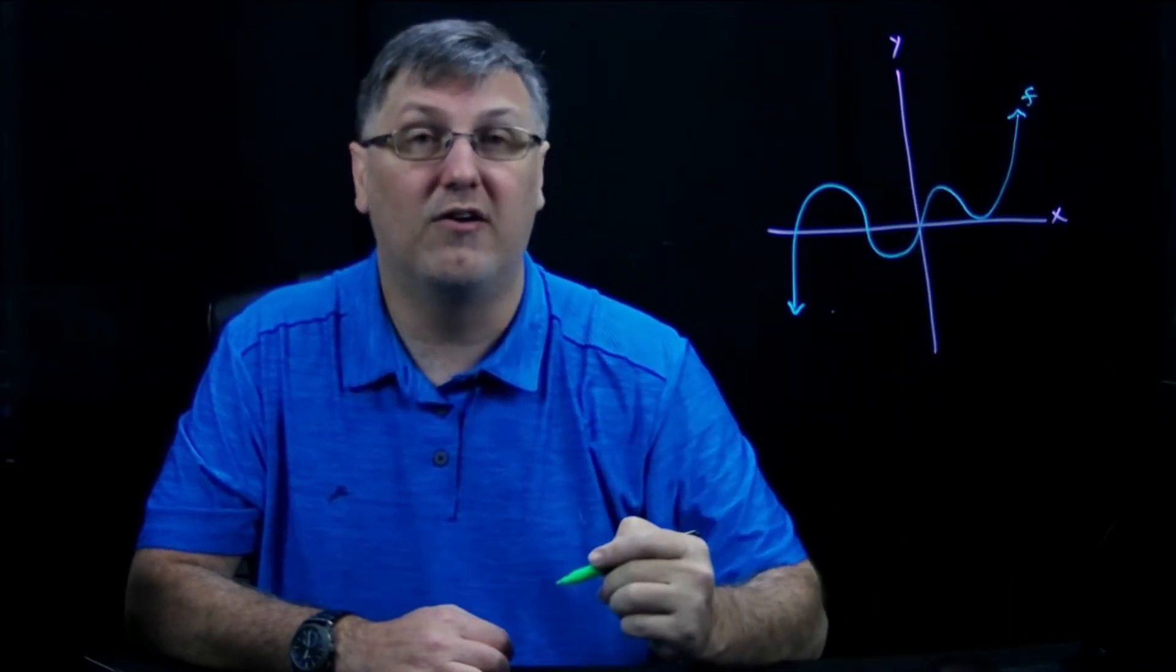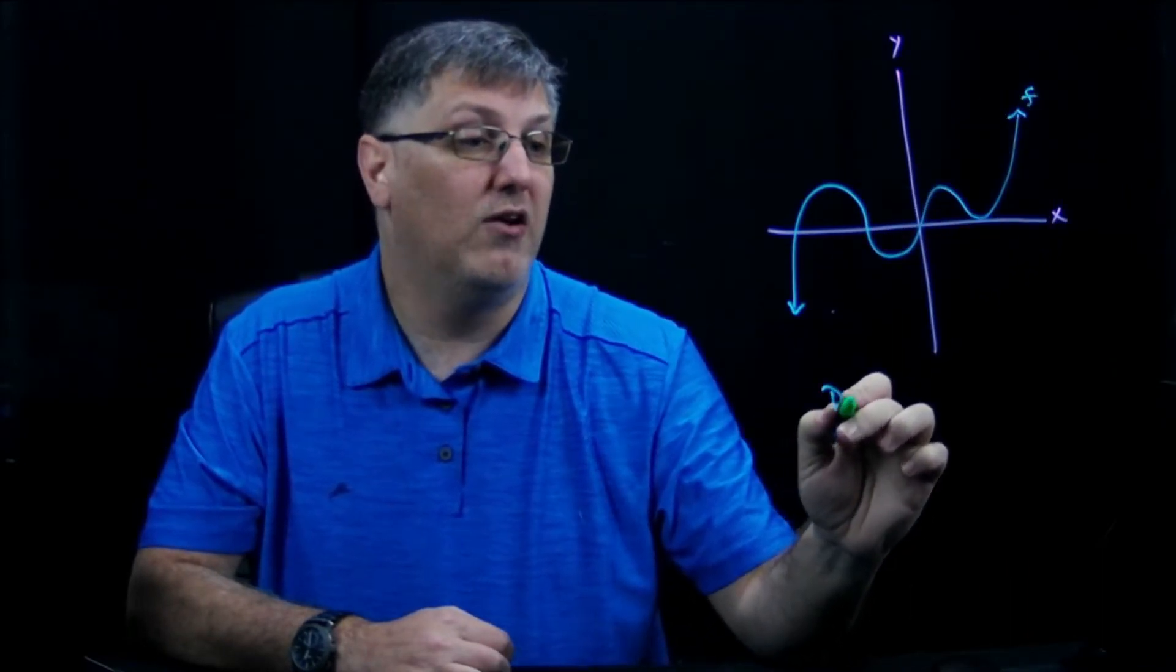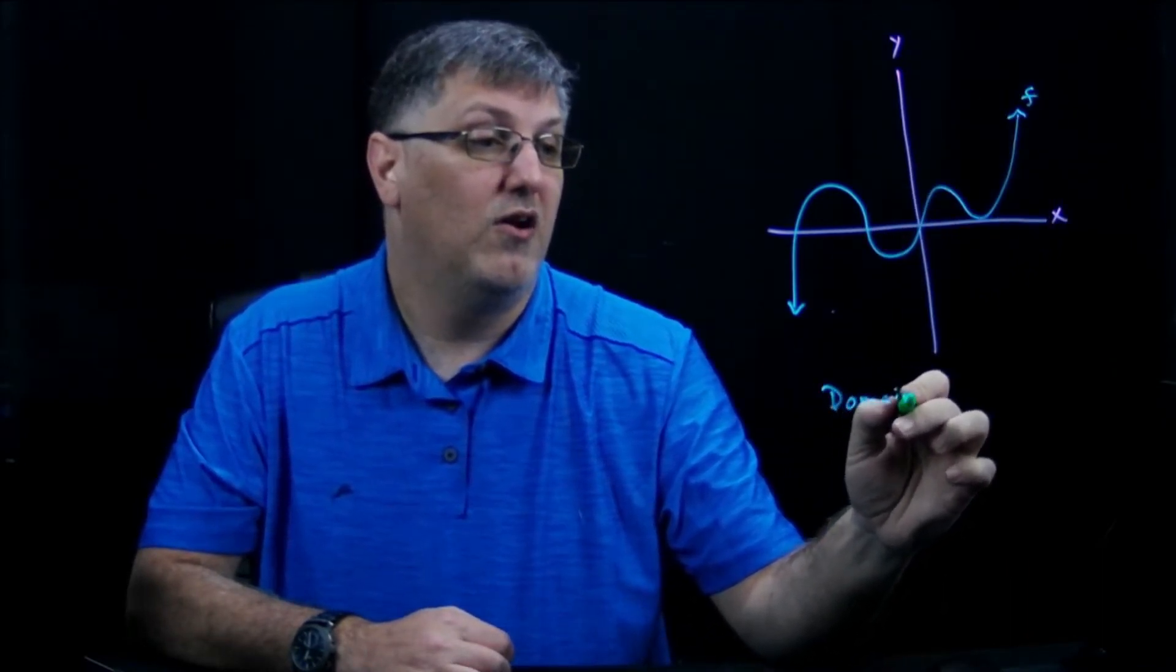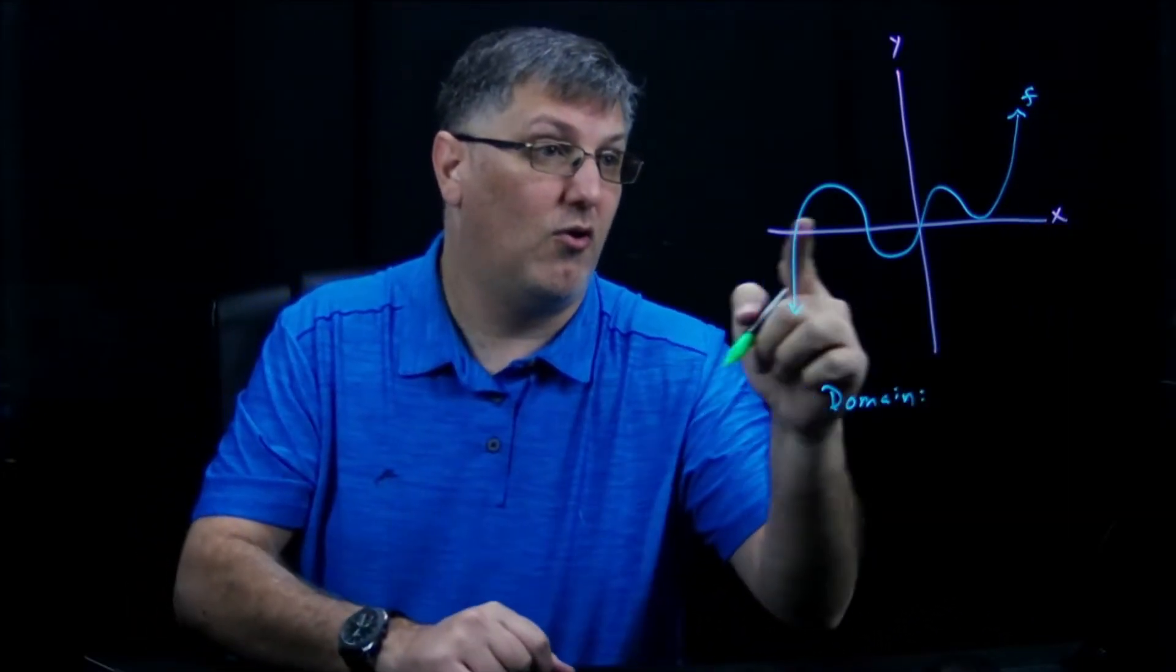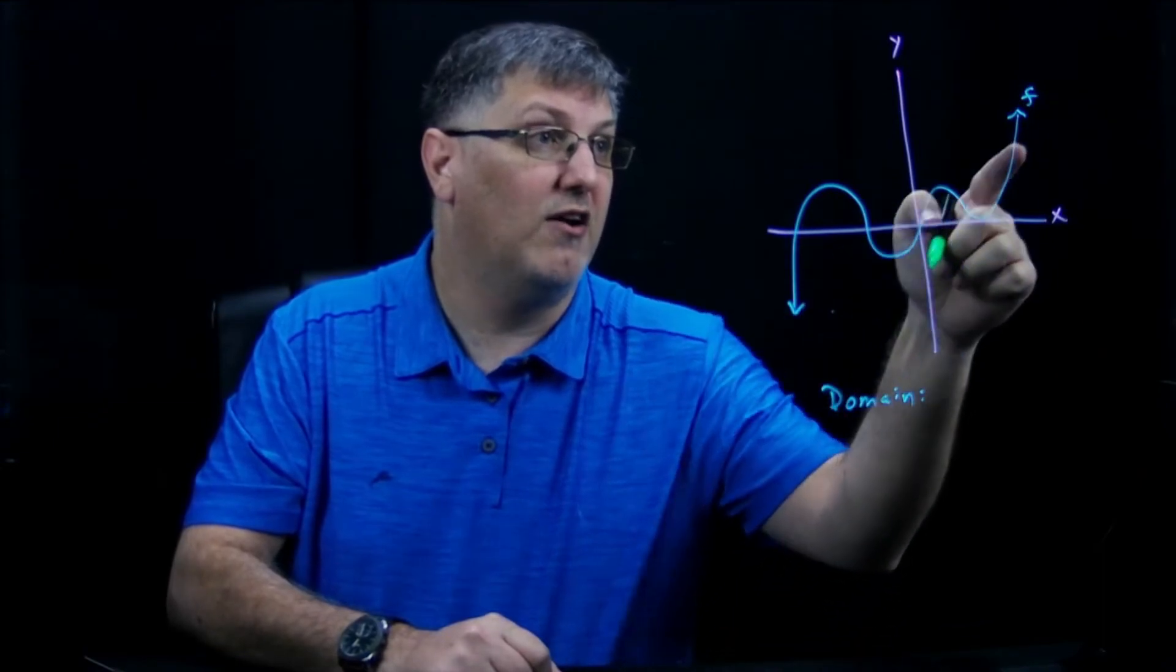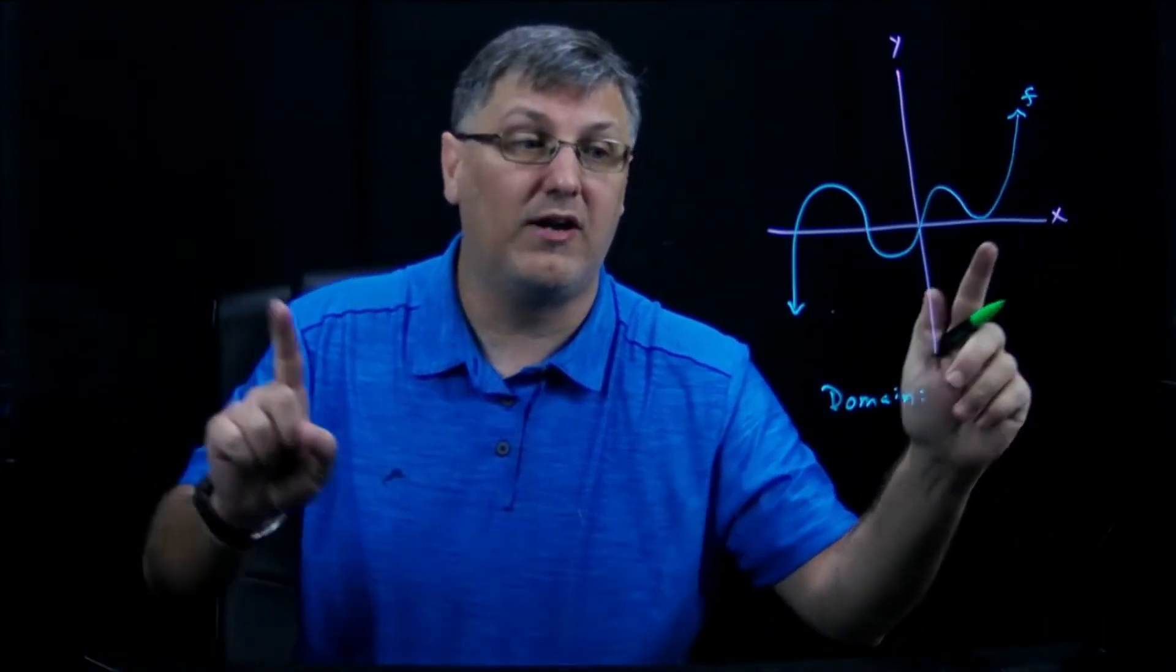But just in general, if this is a polynomial, let's call this graph f. If I ask you for the domain of this graph, my domain is the x's. So all the x values, because of these arrows, it's going forever in both directions.